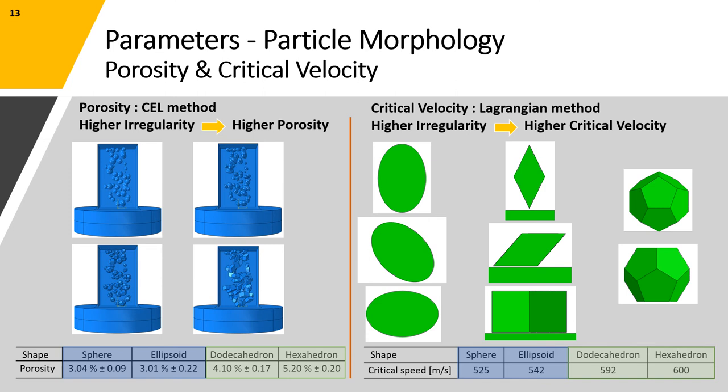Next, we use the single particle Lagrangian model to analyze the critical velocity of particles with different morphologies. For this purpose, for each morphology we consider the principal angles of impact that represent a general case for each particle morphology and we reported the average value for the critical velocity of each morphology in the table below. Again, as you can see, we see an increase in the critical velocity as the irregularity of the morphology of the particle increases.